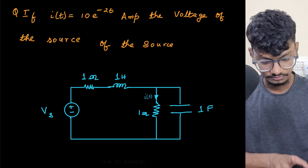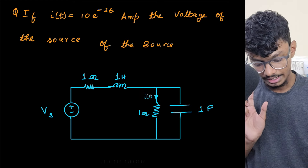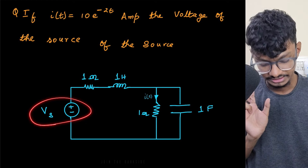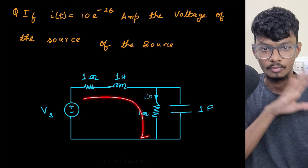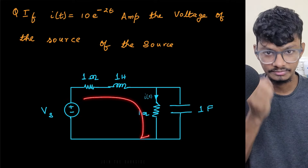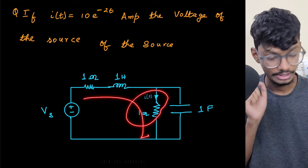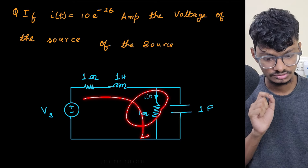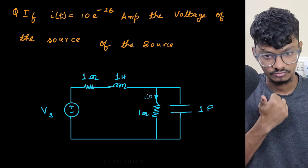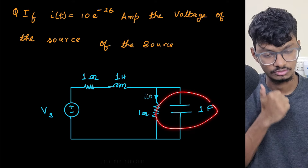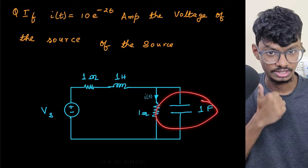They've given me the current i(t), and I have to find Vs. How will I find Vs? If I find the total voltage drop across this whole combination, that will be my Vs. I know this voltage — the voltage across the 1-ohm resistor will simply be one times this current. That gives me the voltage across the capacitor.